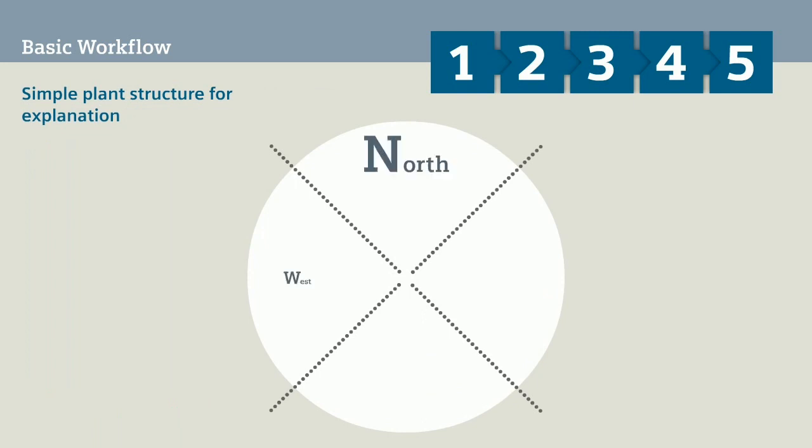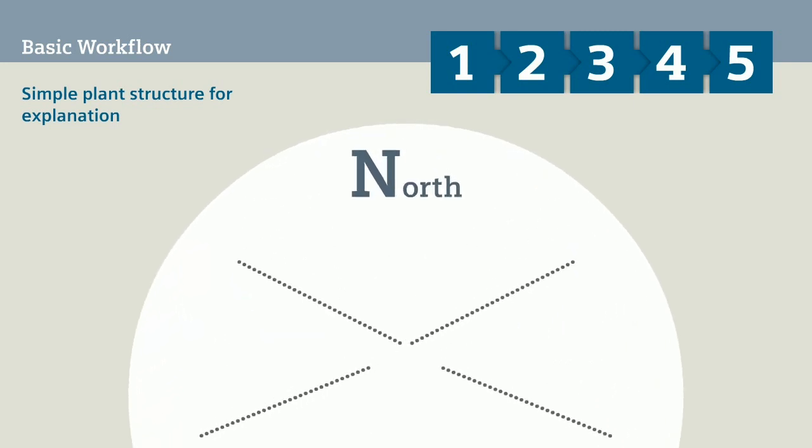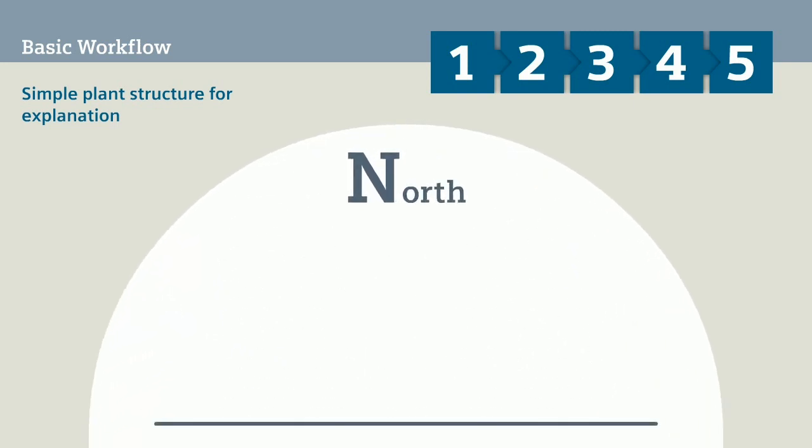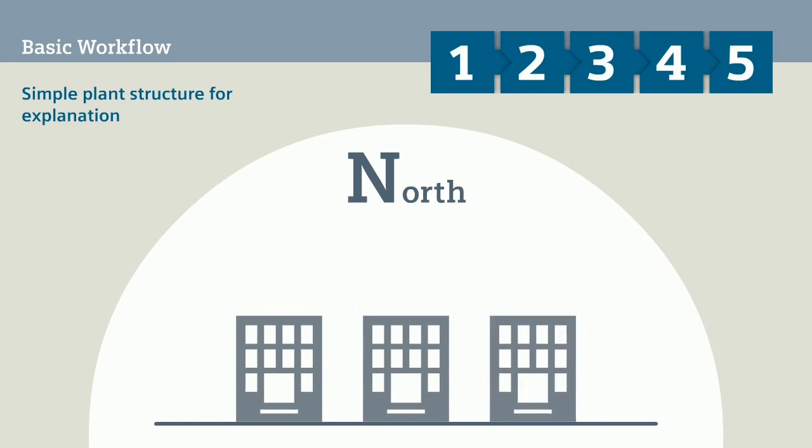The entire plant structure is divided into the four partial plants: north, west, east, and south. When you consider the partial plant north, you will find the three stations A, B, and C in it.